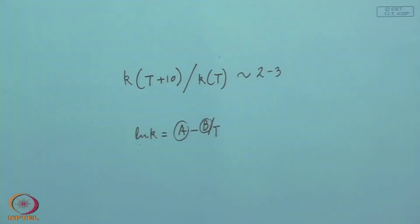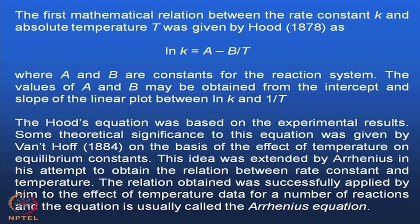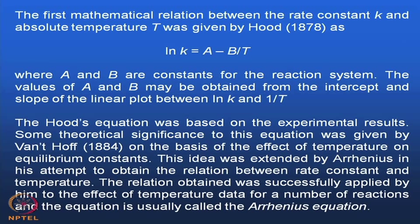Hood's equation was based on experimental results — from data gathered from various chemical processes that were found to fit this equation. Some theoretical significance to this equation was given by Van't Hoff in 1884, on the basis of the effect of temperature on equilibrium constant. Van't Hoff tried to explain why this happens, since equilibrium constants are very sensitive to temperature — if you change the temperature, the equilibrium constant will also change.